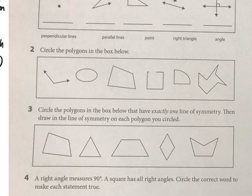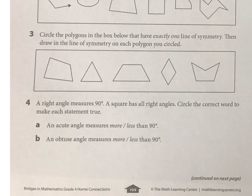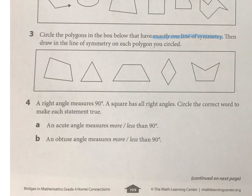Now we're talking about symmetry, and we're looking for specifically exactly one line of symmetry. Symmetry means kind of the same on both sides. This first shape here has no symmetry at all. The rest of them are symmetrical, but it's about figuring out how many lines of symmetry there are.